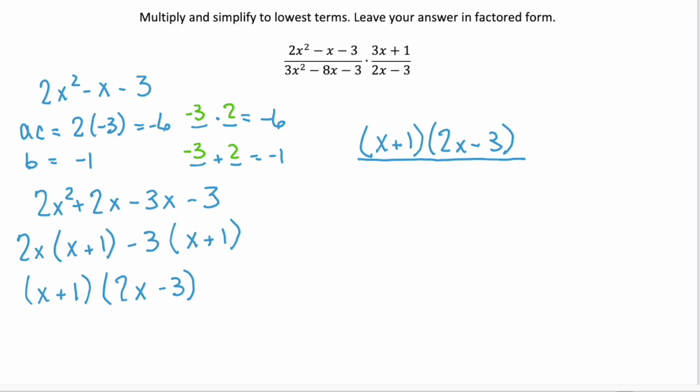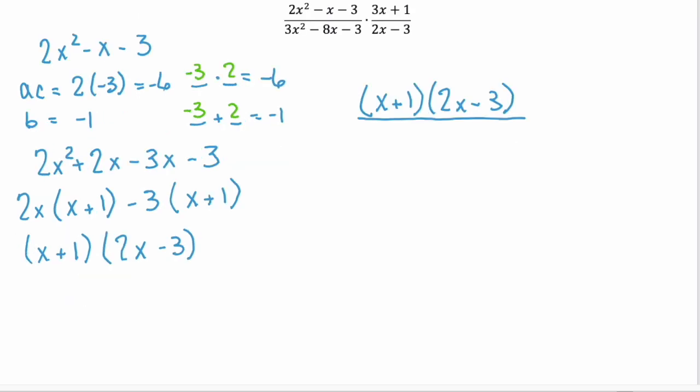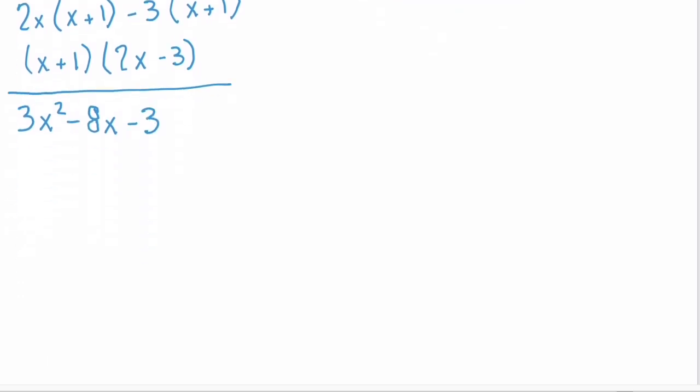Now let's rewrite the denominator. So our denominator here is 3x squared minus 8x minus 3. It has a leading coefficient, so we need to use that key number method. 3 times negative 3 or negative 9.